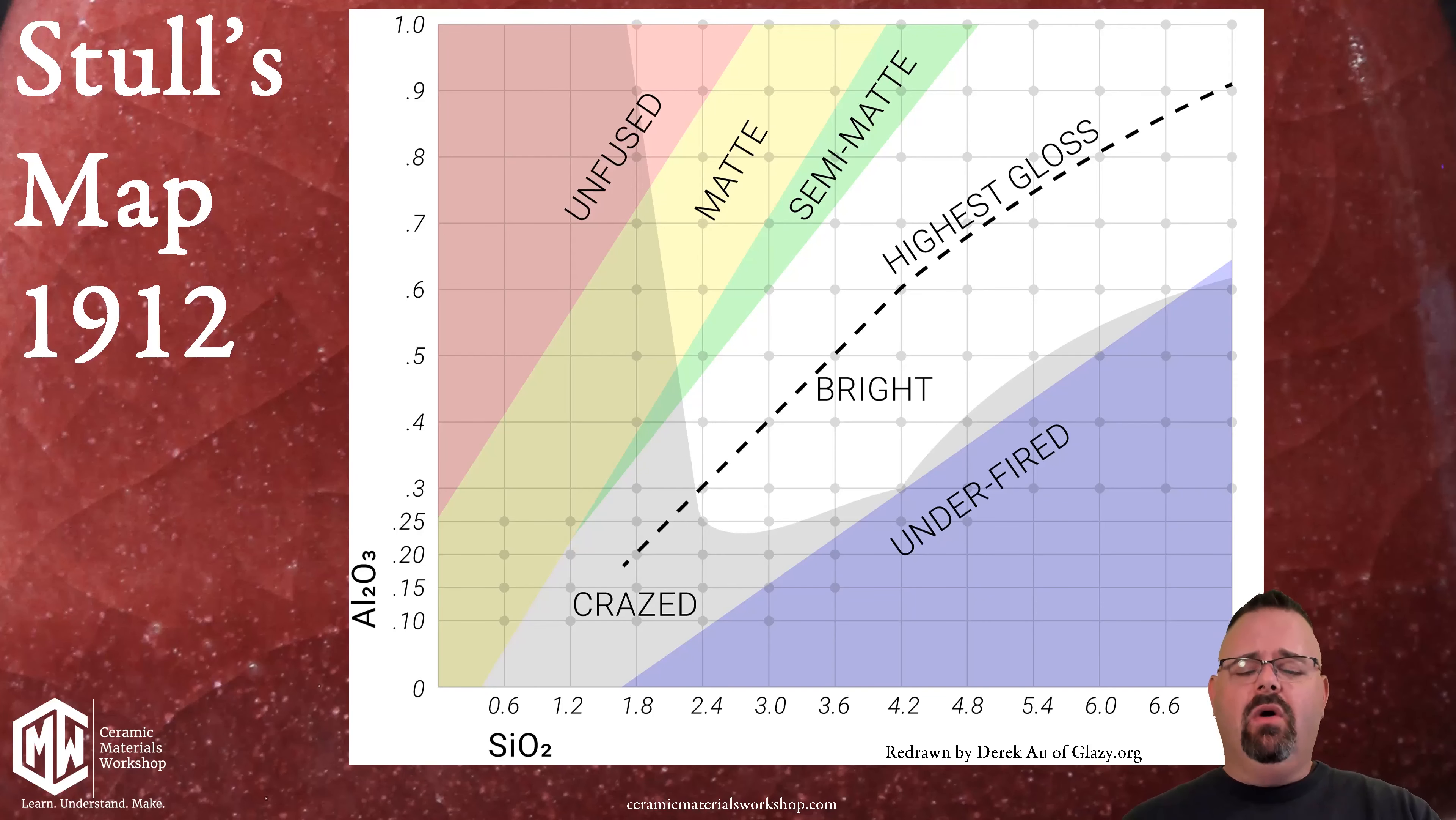But the thing to know about Stull's map is that it's pretty straightforward as long as you've got your footing. Of course Stull's original map was drawn for cone 11 and the question is always, does this still apply at cone 6? And the answer is absolutely 100% yes but we have to use some of the rules of cone 6 that we're going to develop later in this workshop. But let's look at the map itself first.